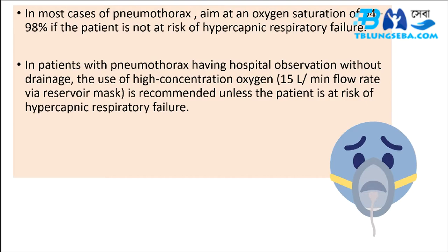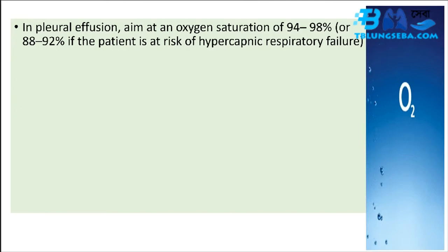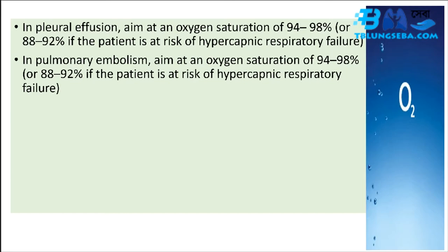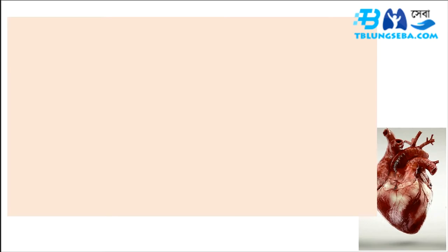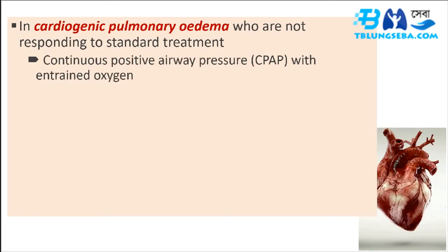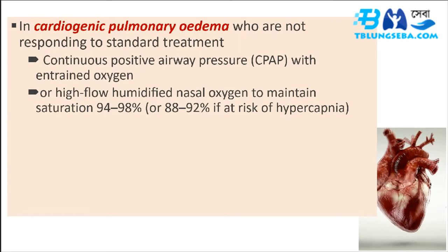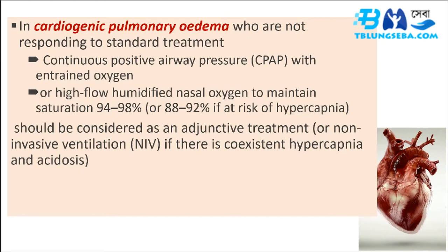In pleural effusion, aim at 94 to 98% or 88 to 92% if at risk of hypercapnic respiratory failure. In pulmonary embolism and acute heart failure, aim at 94 to 98% or 88 to 92% if at risk of hypercapnic respiratory failure. In cardiogenic pulmonary edema not responding to standard treatment, continuous positive airway pressure with entrained oxygen or high flow humidified nasal oxygen to maintain 94 to 98% (or 88 to 92% if at risk of hypercapnia) should be considered, or NIV if coexistent hypercapnia and acidosis.